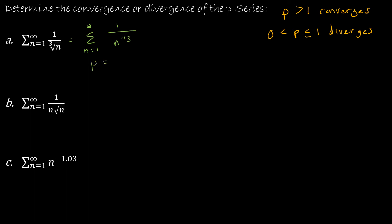Now that I've written it that way, it's clear that p is equal to 1 third. Since p is between 0 and 1, this diverges by p series.